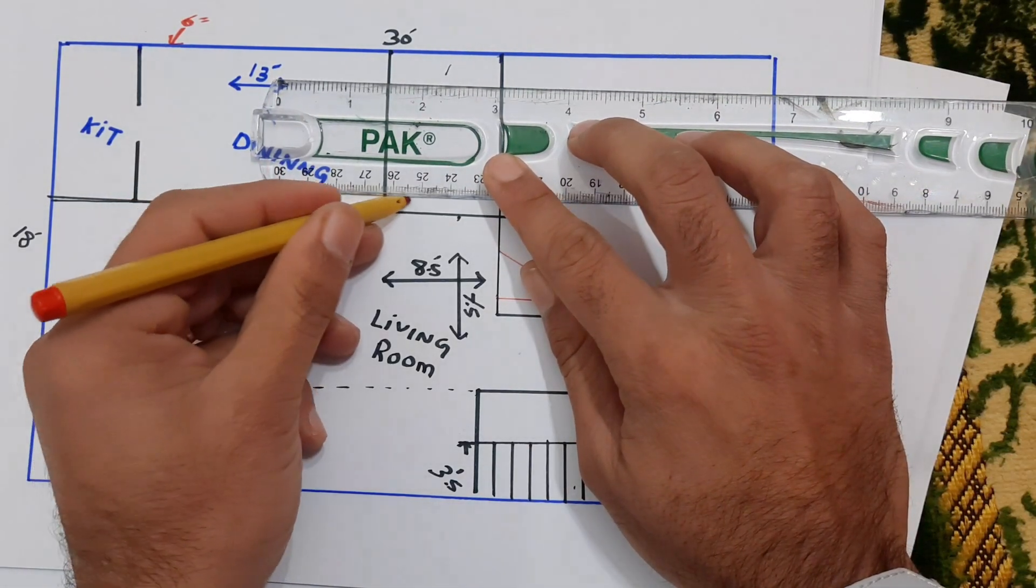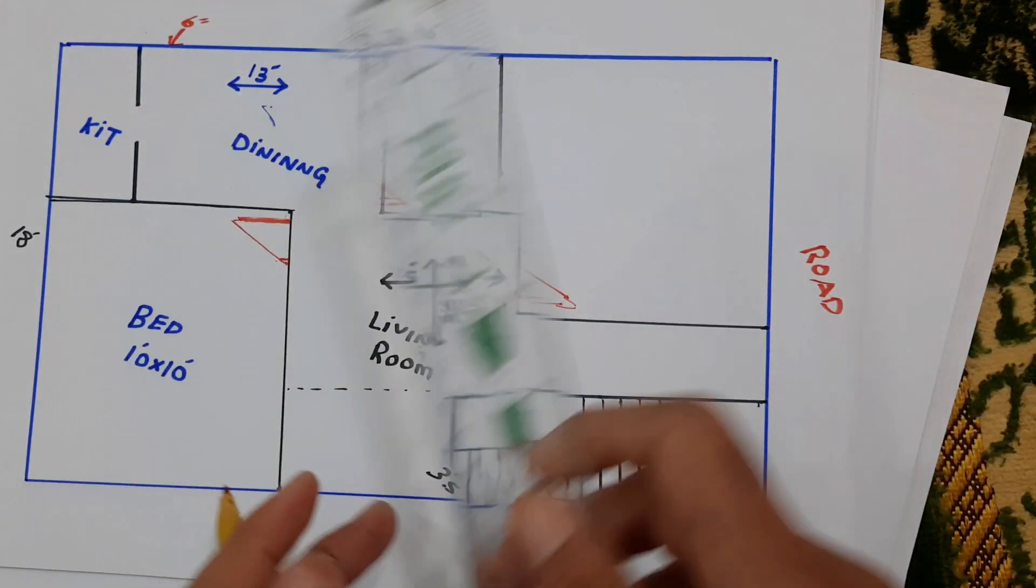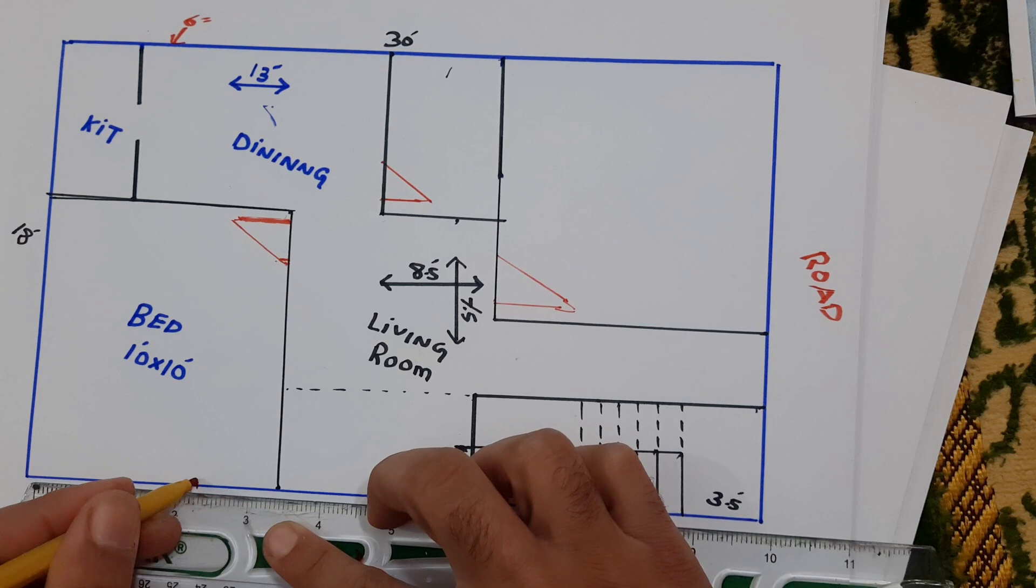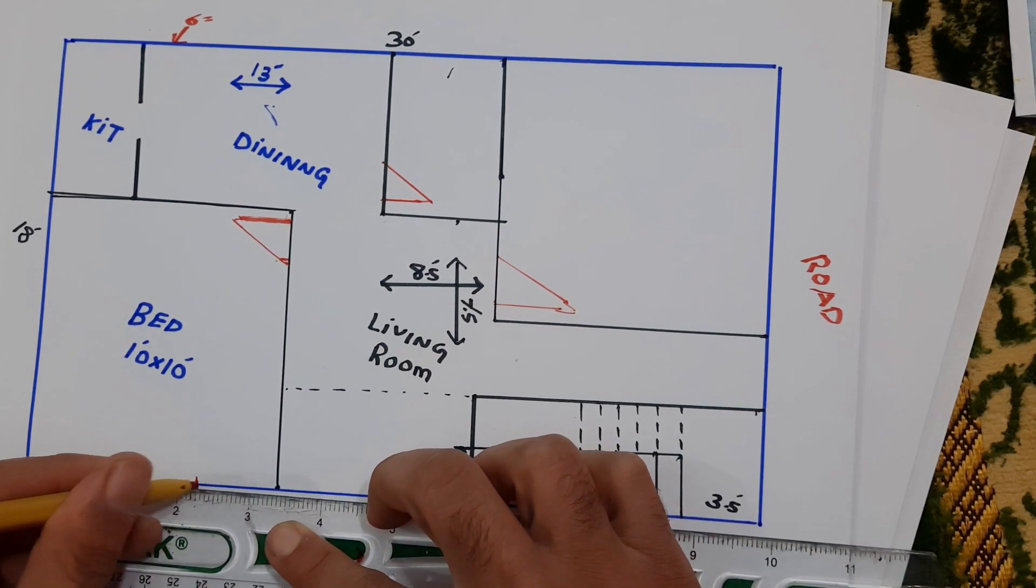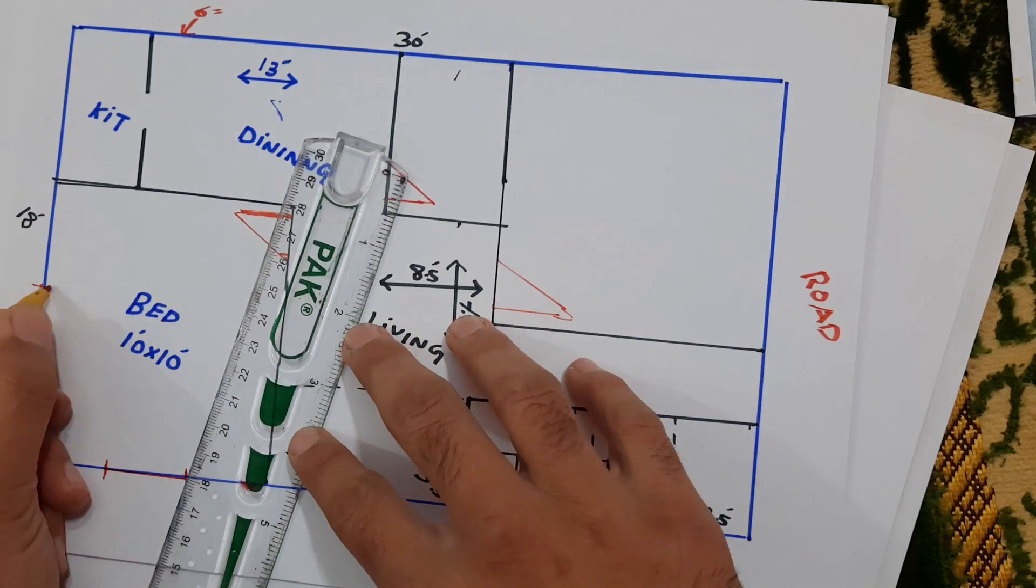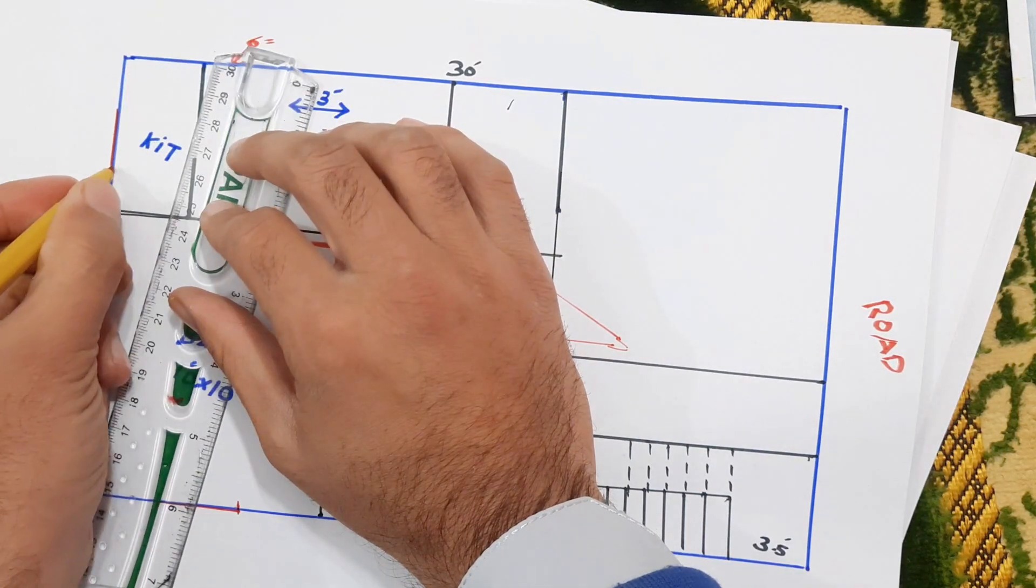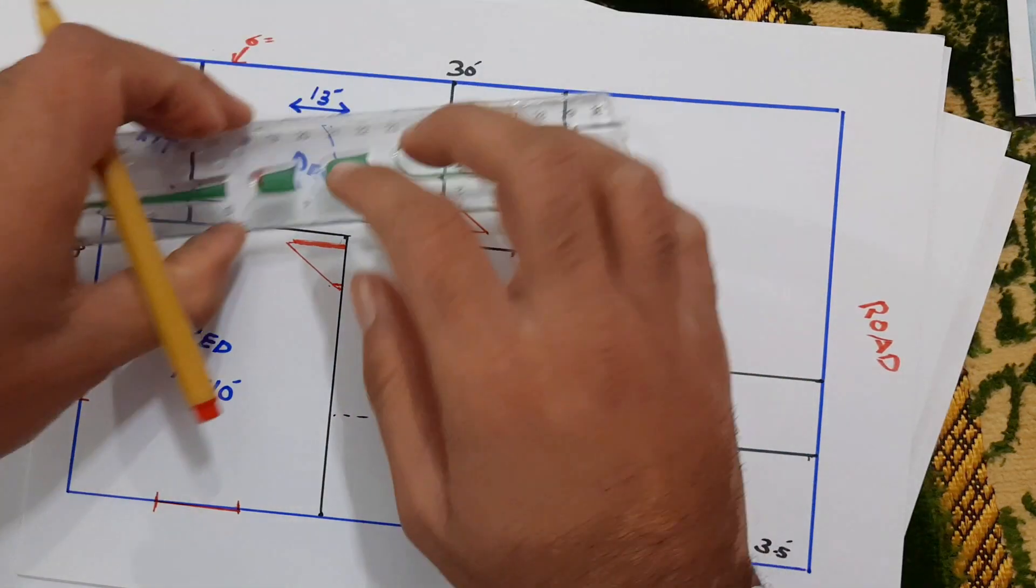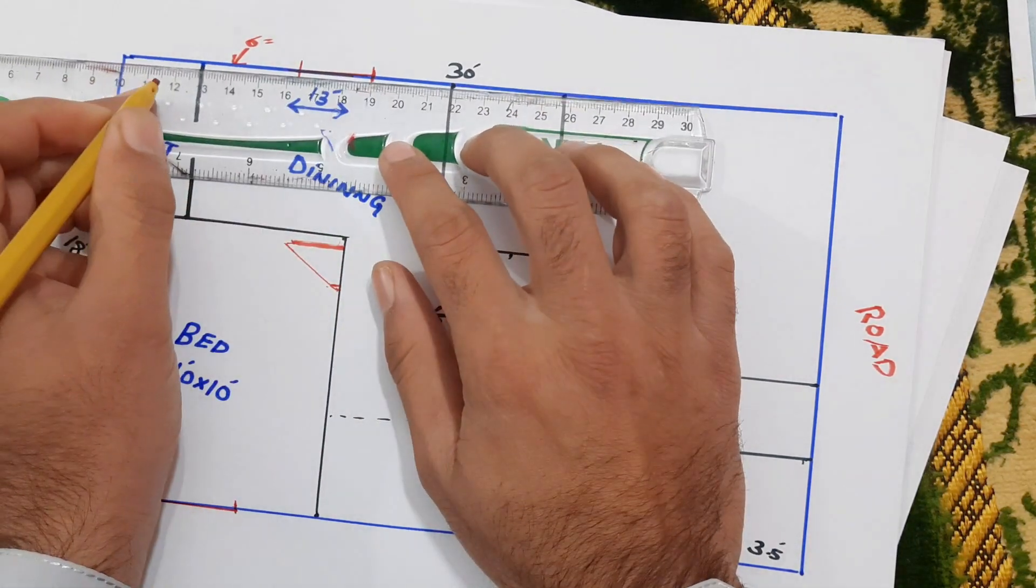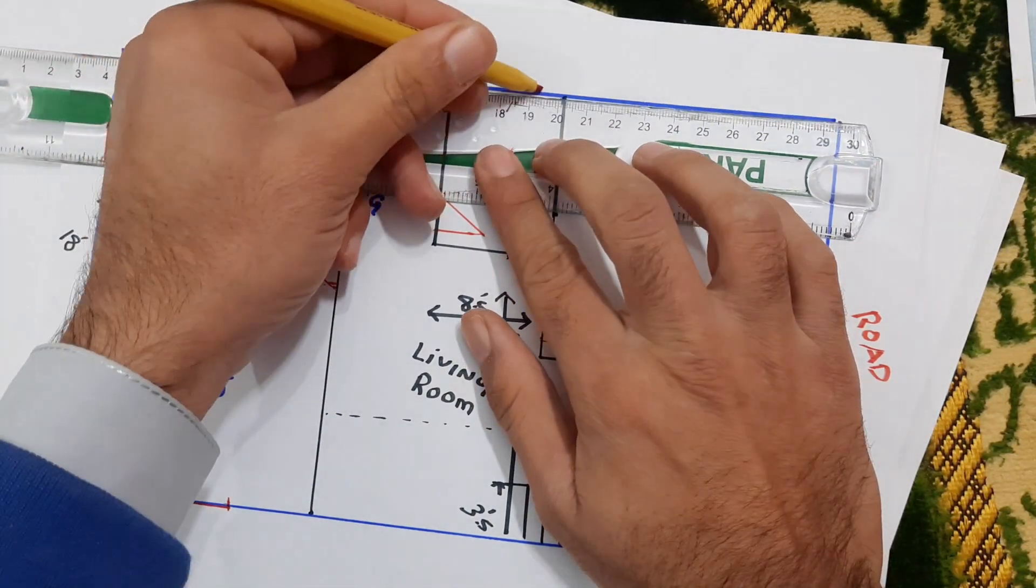Here, this is a toilet plus bath. Okay, so now you can see the window for this bedroom. You can see the window pointing for this kitchen. This is for dining. Here, this is ventilation for this bath plus toilet.